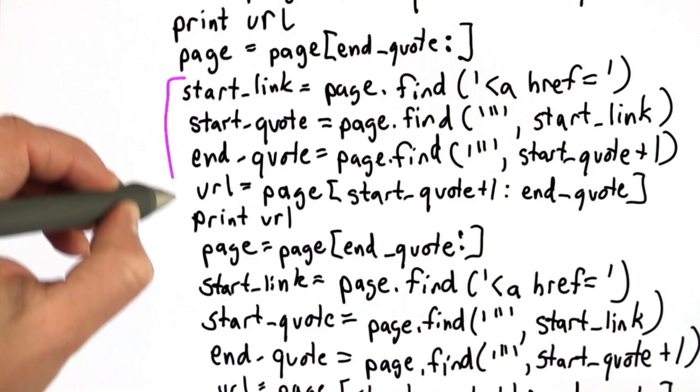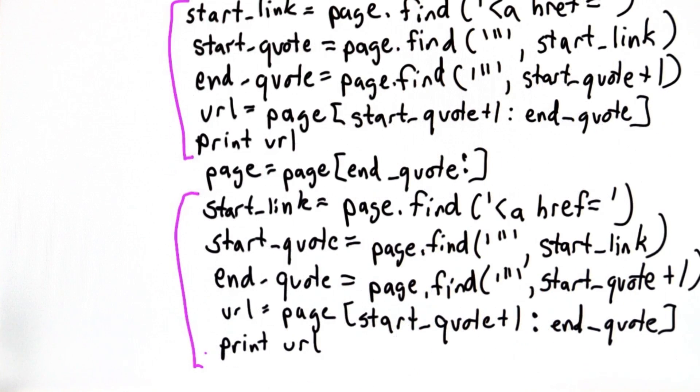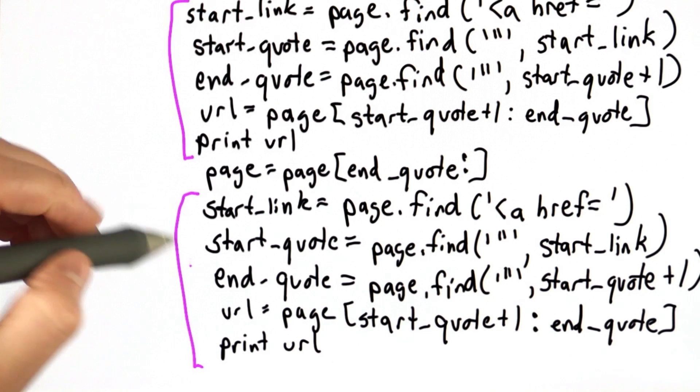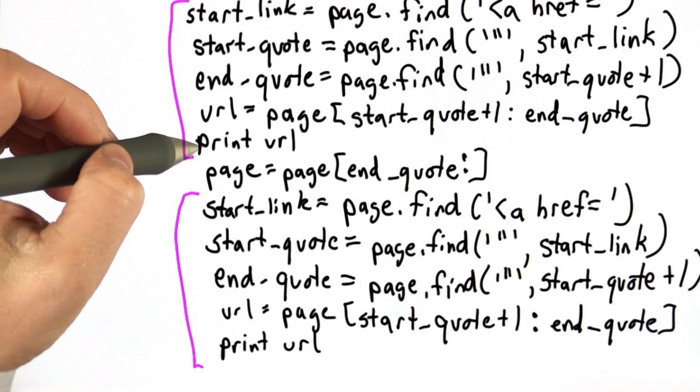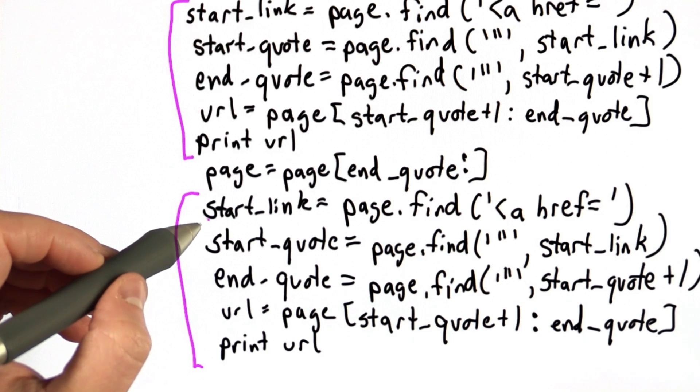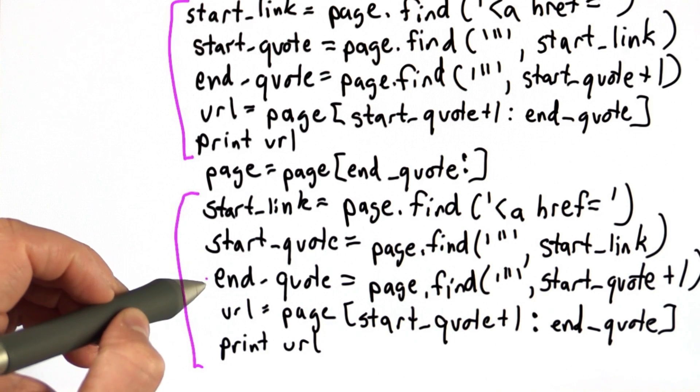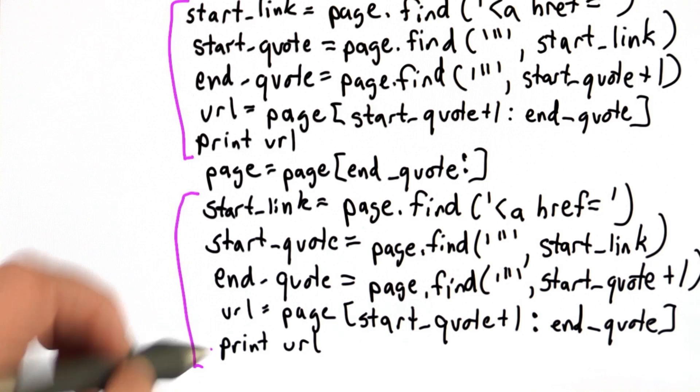So if you look at each segment of code here, these lines were copied exactly the same way. We did the same thing over and over again, the same five lines of code to find the start of a link in page, to find the start and the end quote, and then extract the URL and print the URL.